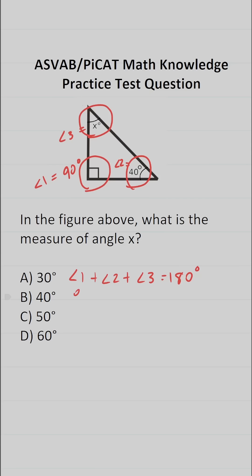This becomes 90 plus 40 plus x equals 180. Clearly, all we have to do is solve this equation for x. 90 plus 40 is 130. So this becomes 130 plus x equals 180.